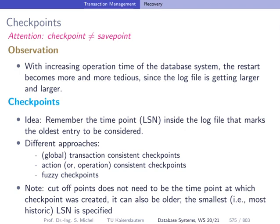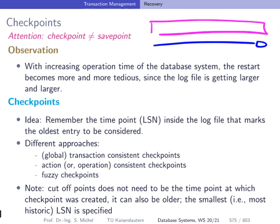When we're creating the log file in the normal operation of a database system, this file can get very large because we always append log entries. We want to avoid that in the restart process after a crash, we have to read the entire file. Checkpoints introduce a mechanism to limit the amount of log entries to a recent subset of this big file, so hopefully we only have to read a small part of the log file instead of the entire one.